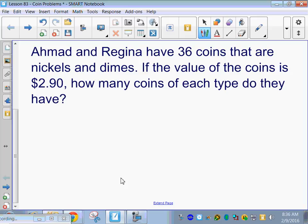Anybody have an idea for an equation that's just total coins? What do you think, Josh? That is correct. N plus D equals 36. So, a certain number of nickels plus a certain number of dimes has to equal 36 because there's 36 coins.